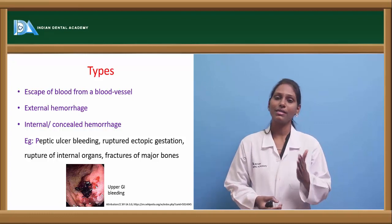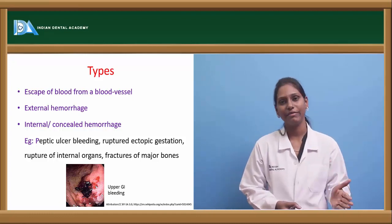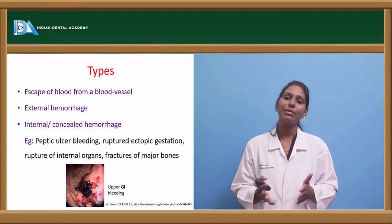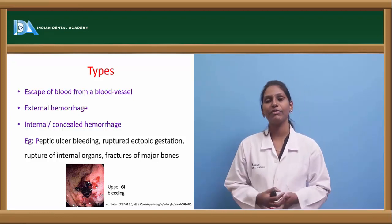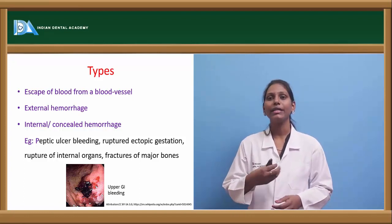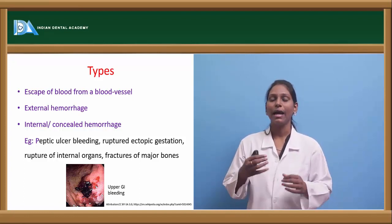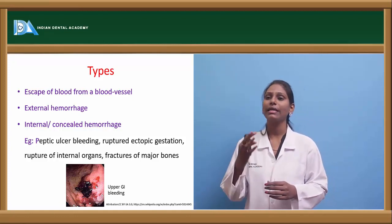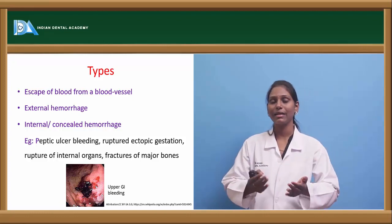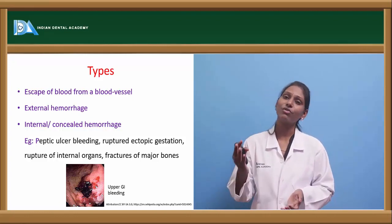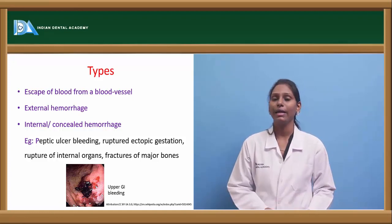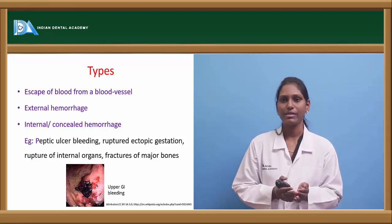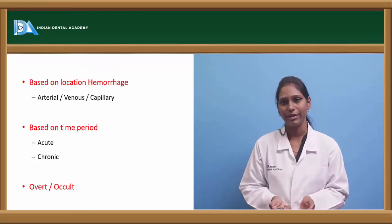Technically, hemorrhage is the escape of blood from the blood vessels. Internal hemorrhages can be of various types — for example, internal bleeding in peptic ulcer, ruptured ectopic gestation, ruptured internal organs, perisac collection of fluid, and fractures of major bones can cause hemorrhage within the tissue spaces leading to hematoma formation. This is called internal or concealed hemorrhage.